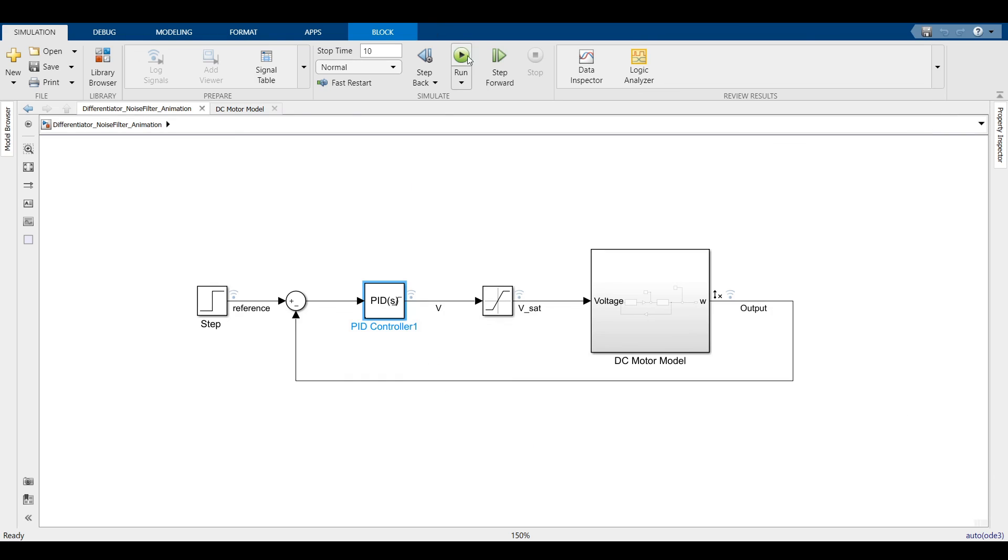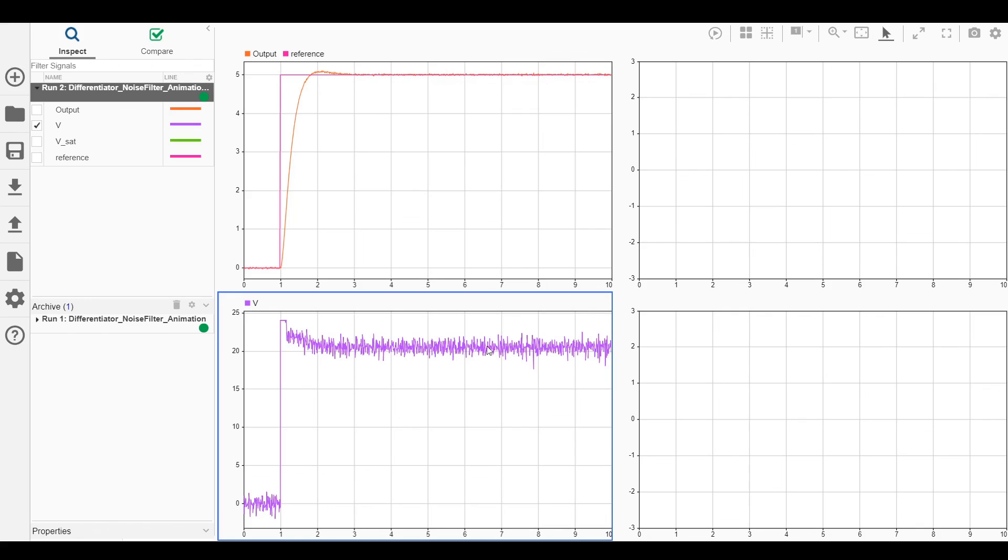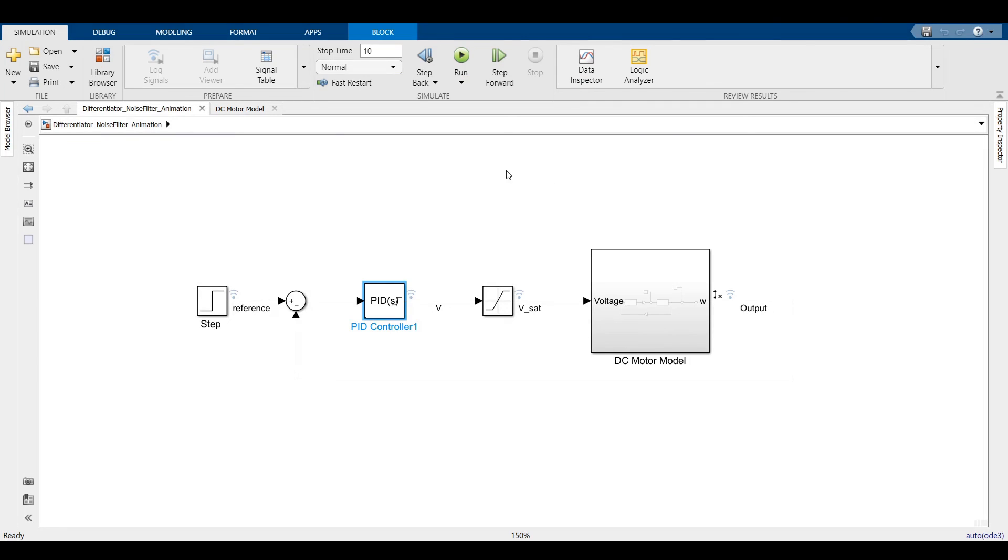Let us reduce the value of n to 50 radians per second so that we eliminate most of the high frequency noise. We will run the simulation again. Now the actuator input looks good. So you should implement the differentiator term very carefully as it is capable of damaging your system.